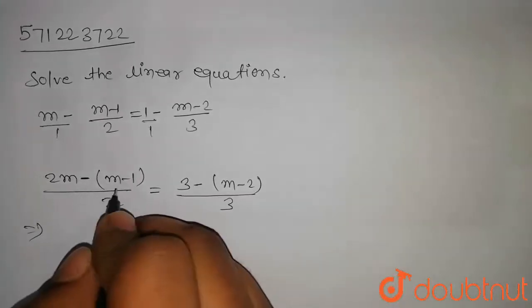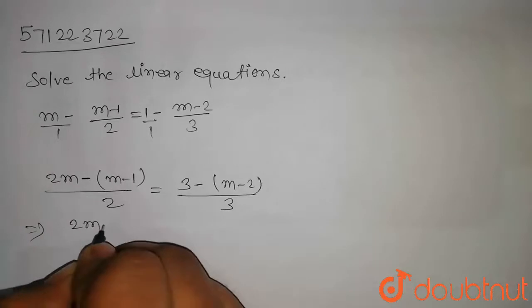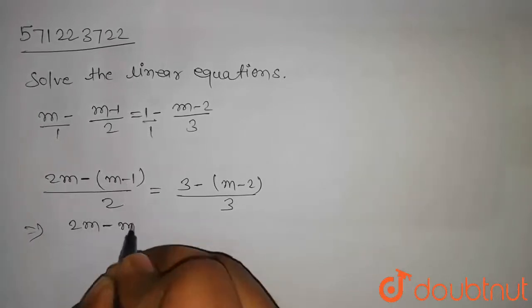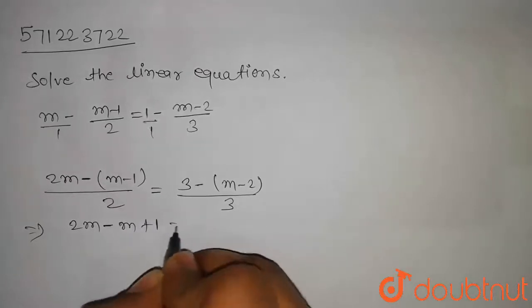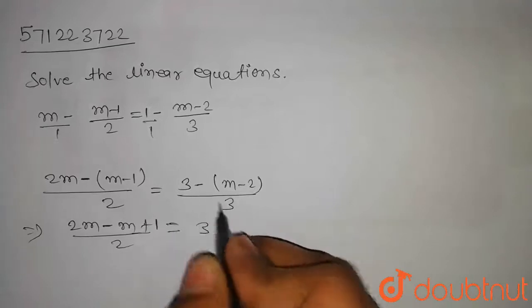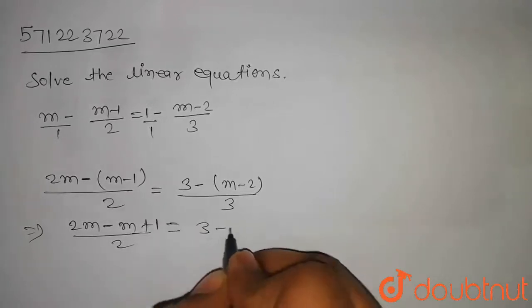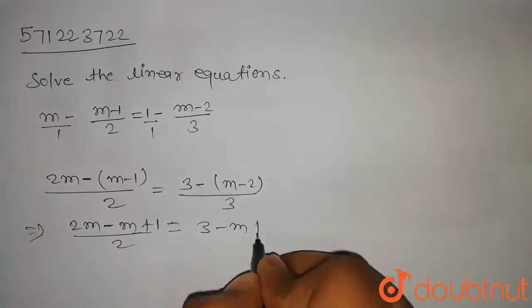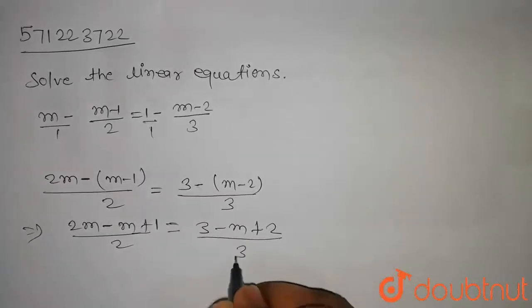Now we will open the bracket. That is 2m minus m, and minus into minus will be plus 1 by 2, equal to 3 minus m, and minus into minus that is plus 2 by 3.